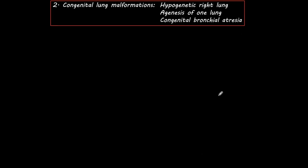I am showing you this because the second conditions that show non-significant findings are congenital lung malformations, which in my experience are not rare in adults. I'm going to mention the three most common: hypogenetic right lung, agenesis of one lung, and congenital bronchial atresia. All three can be suspected on plain film, sometimes diagnosed, and always confirmed with CT.